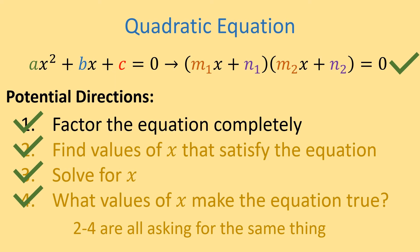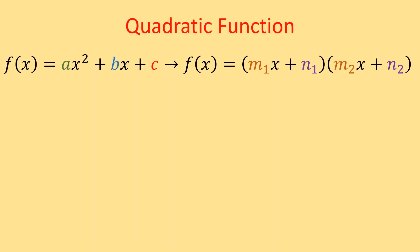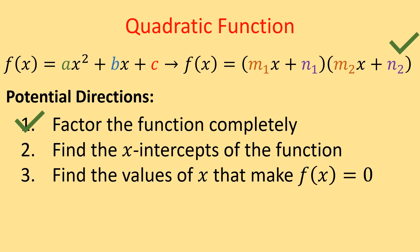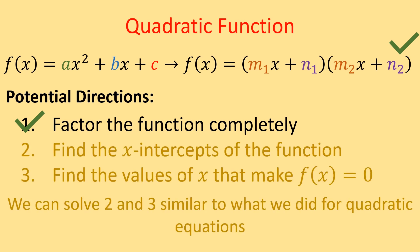Now let's look at the directions for a quadratic function. You know you're working with a function when you have f of x equals ax squared plus bx plus c. We're going to assume we already have the function factored. If our directions are to factor the function completely, we're already done. But other directions could be: find the x-intercepts of the function, or find the values of x that make f of x equal to 0. Both of those are asking the same thing, and we'll use a process similar to the quadratic equation.